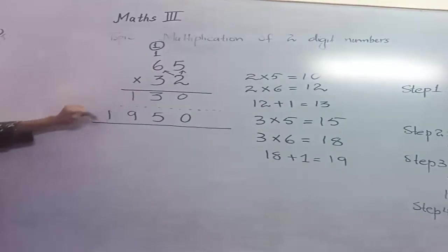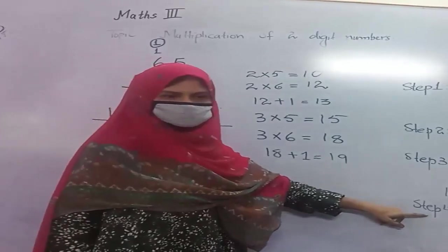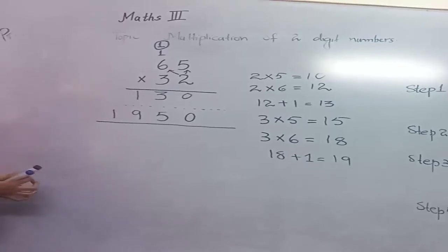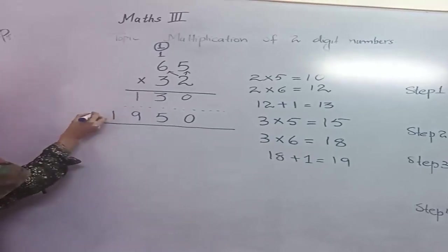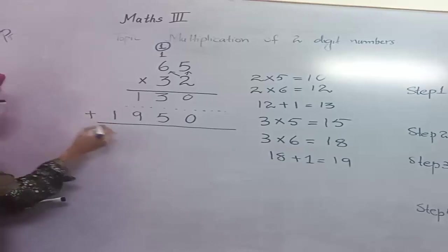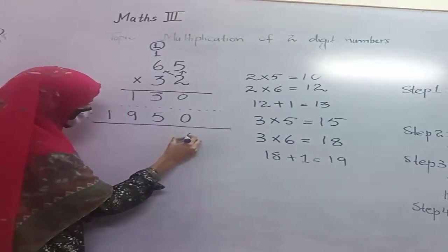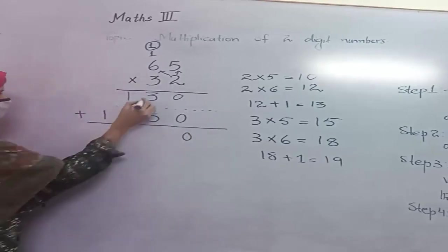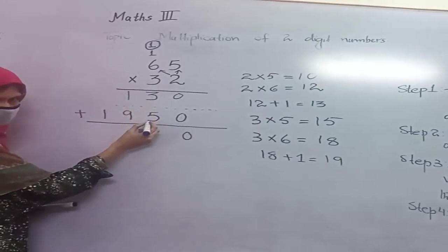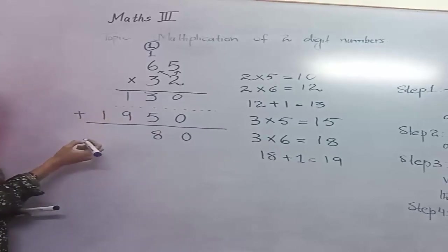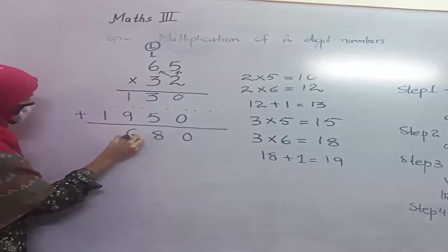Add all these products and we get the answer. 0 and 0 equals 0. 3 plus 5 equals 8. 1 plus 9 equals 10.